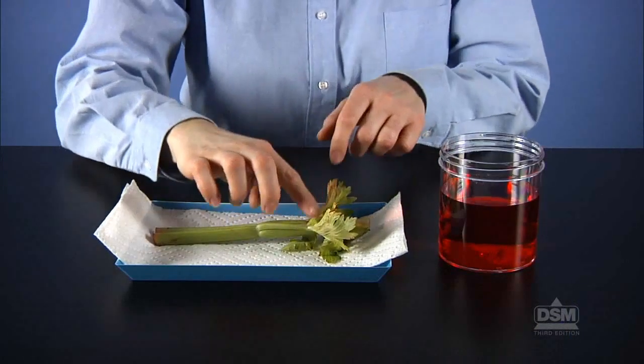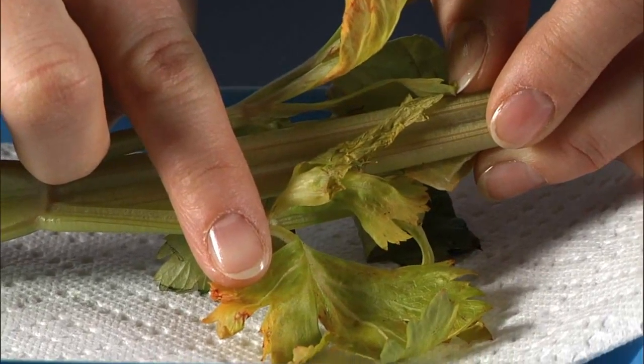To begin Session 2, after about four hours, distribute the materials to each team and have them retrieve the jars and activity sheets from Session 1. Encourage students to remove the stalk from the jar and examine it. They should observe that the leaves have turned red.